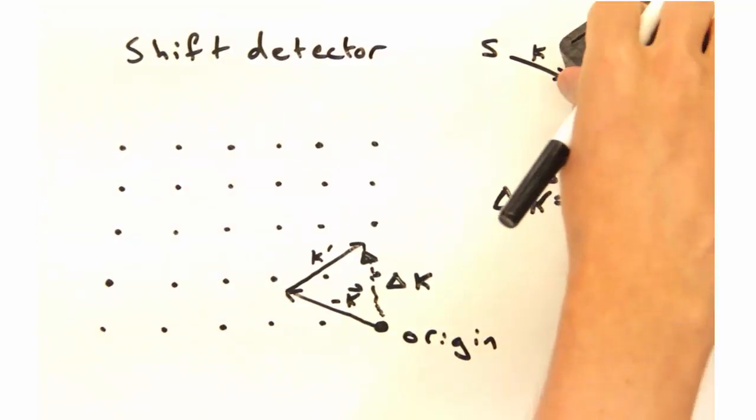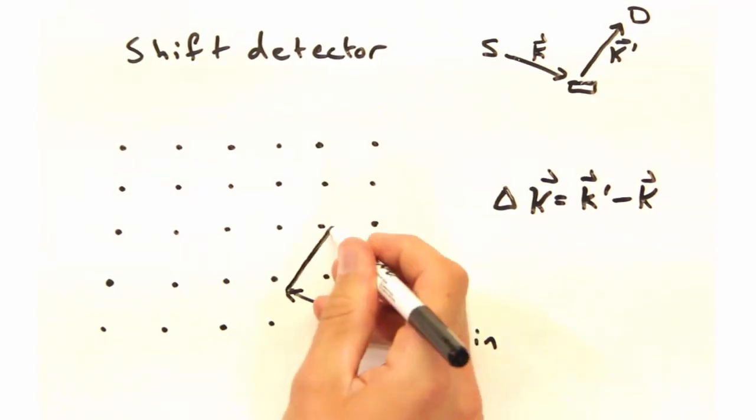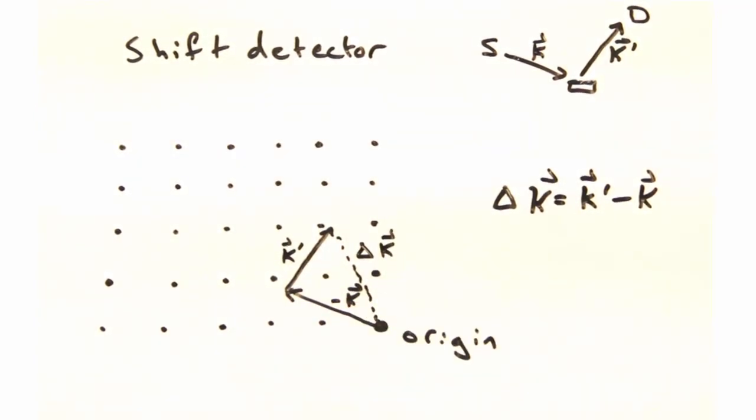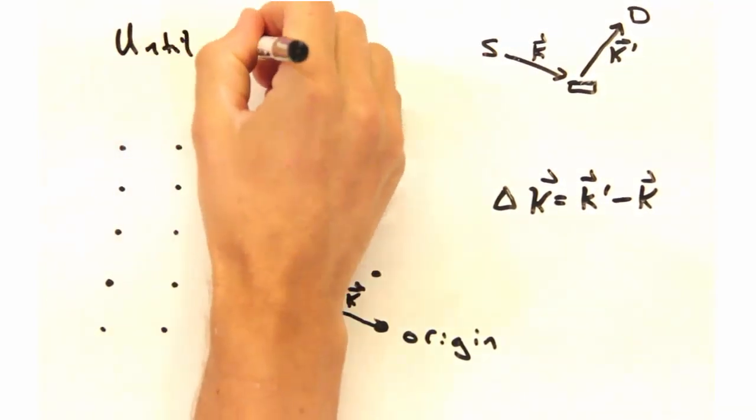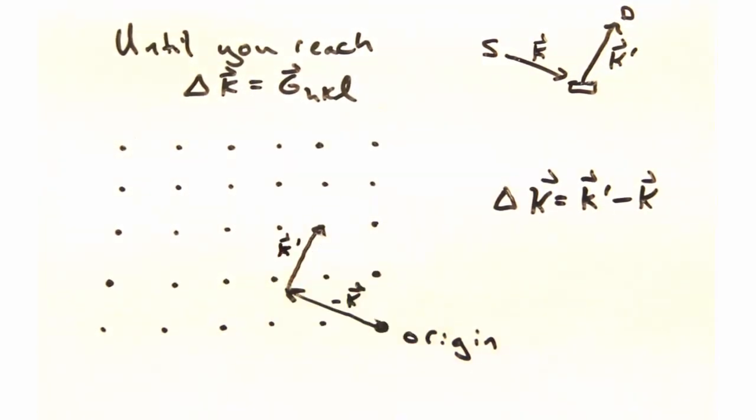But what happens as we shift our detector? Then we would need to redraw k prime and thus get a different delta k. If we continue moving the detector, we may eventually reach a configuration where delta k equals g at some hkl.